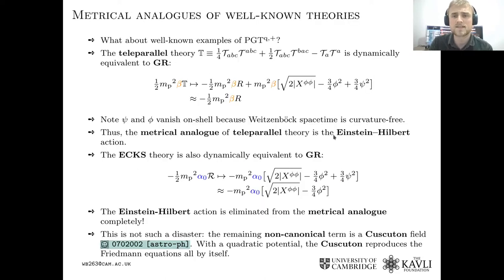So let's consider the metrical analogs of some well-known torsion theories, which are special cases of the general quadratic torsion theory, the general Poincaré gauge theory. Let's consider teleparallelism. So teleparallelism is dynamically equivalent to general relativity. But it takes place in Weitzenböck spacetime. So the assumption is that there is only torsion and there is no curvature, which is quite strange. But it's also quite popular these days if you look at the arXiv.